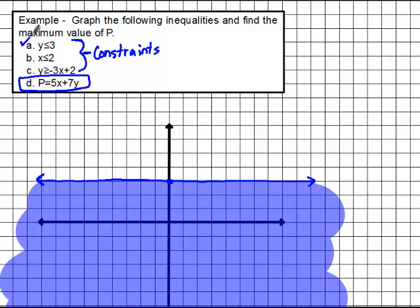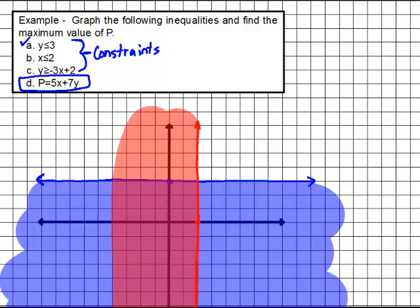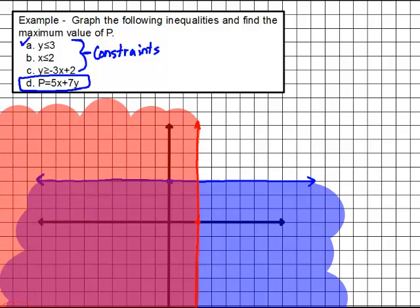Our next inequality is X is less than or equal to 2. We go over from our origin 2 on the x-axis. This type of line is going to be a vertical line, so we draw a line going straight up and down through that one point. We shade everything to the left because we want all the values less than positive 2. If you look, we already have one area where both of those two inequalities overlap.